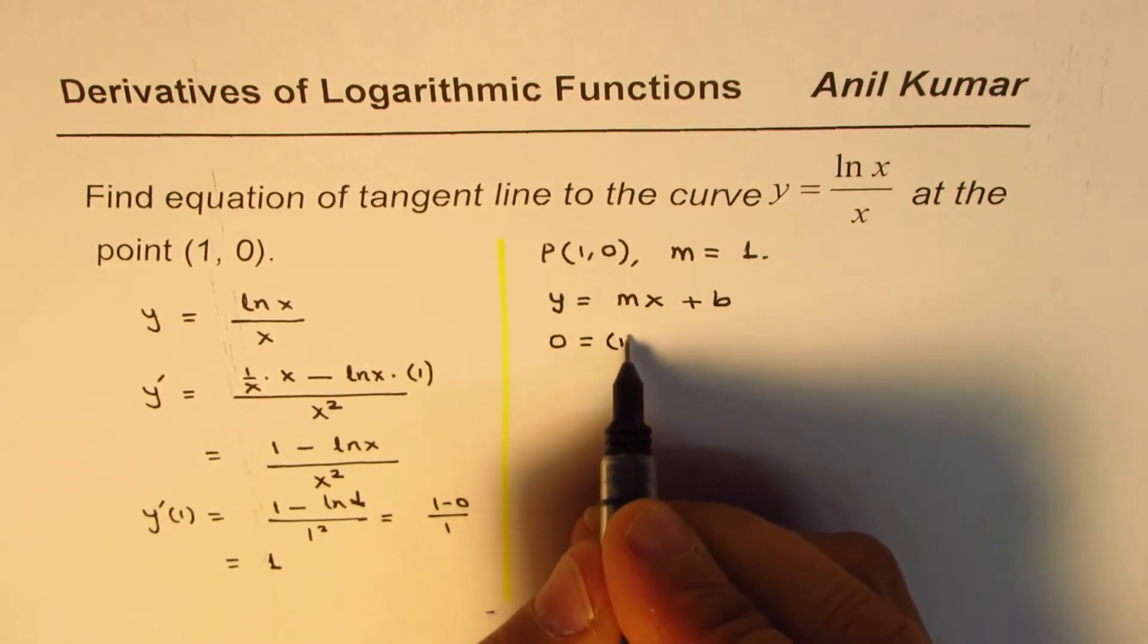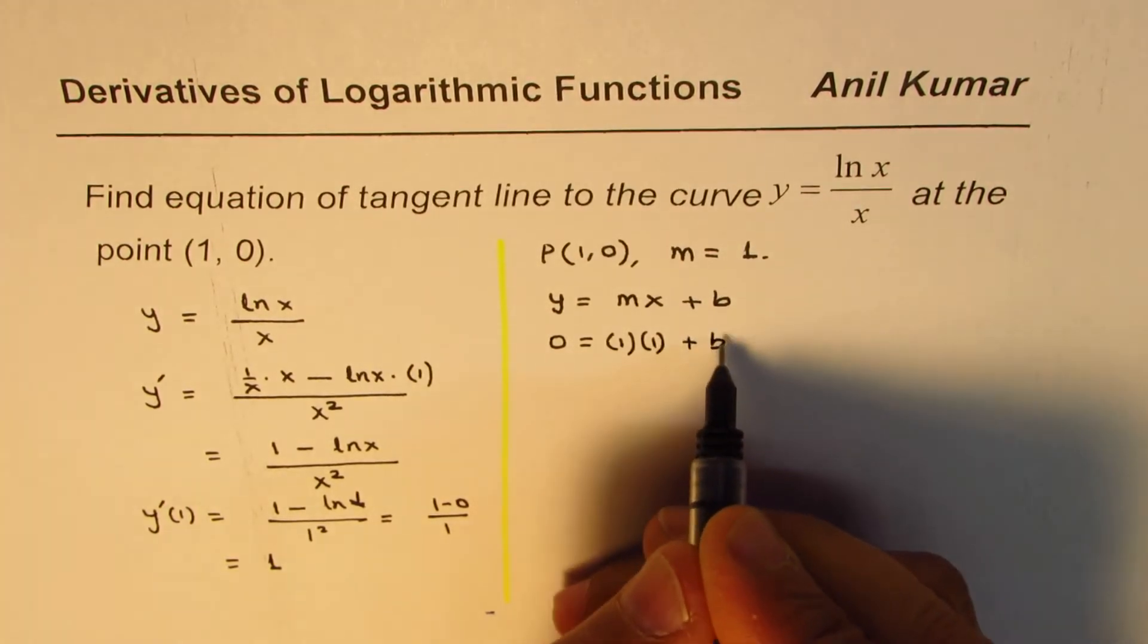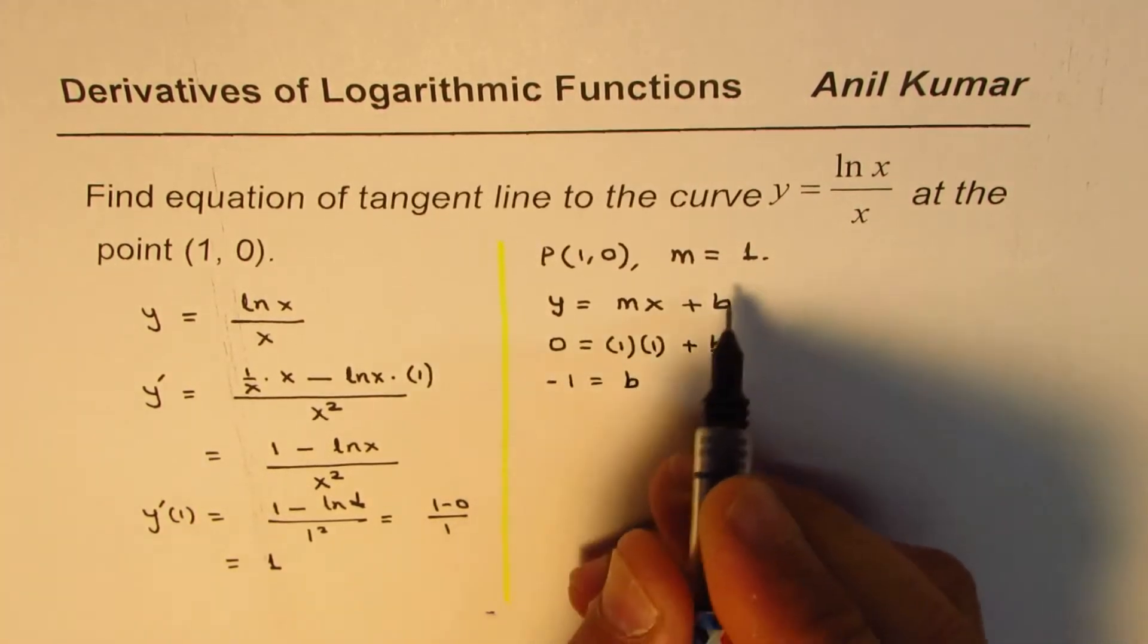m slope is 1, x is also 1, so we can find the value of b. b will be minus 1.